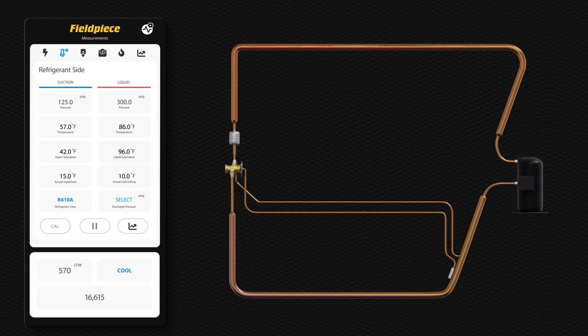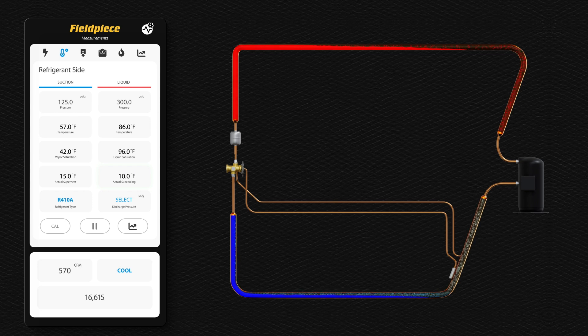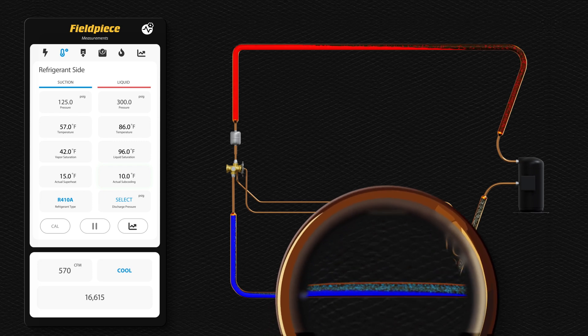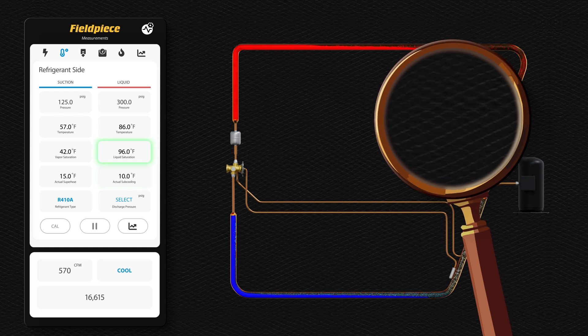The Fieldpiece app shows the saturated condensing temperature equals 96 degrees Fahrenheit. In the condenser, whenever vapor and liquid exist, the refrigerant temperature will be 96 degrees. Any heat removed will only assist in a phase change from vapor to liquid, but the temperature will remain 96 degrees.